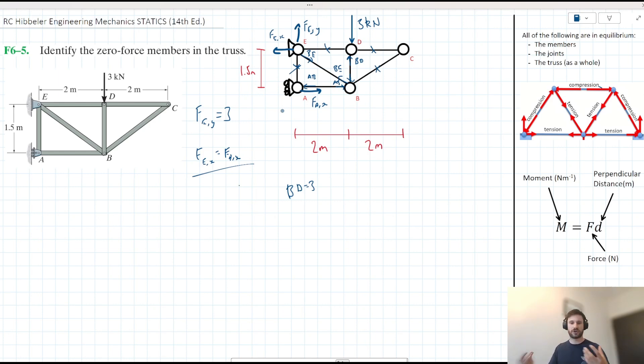We could expand this, considering all the things acting horizontally here. So we could say FE,X is equal to the X component or the horizontal component of BE. So we could say FE,X is equal to BE subscript X. And we then note that that is then equal to AB, which is then equal to FA,X.